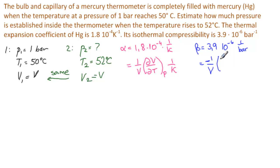1 over V, delta V, and now delta P. The temperature is constant, and that's 1 over bar.